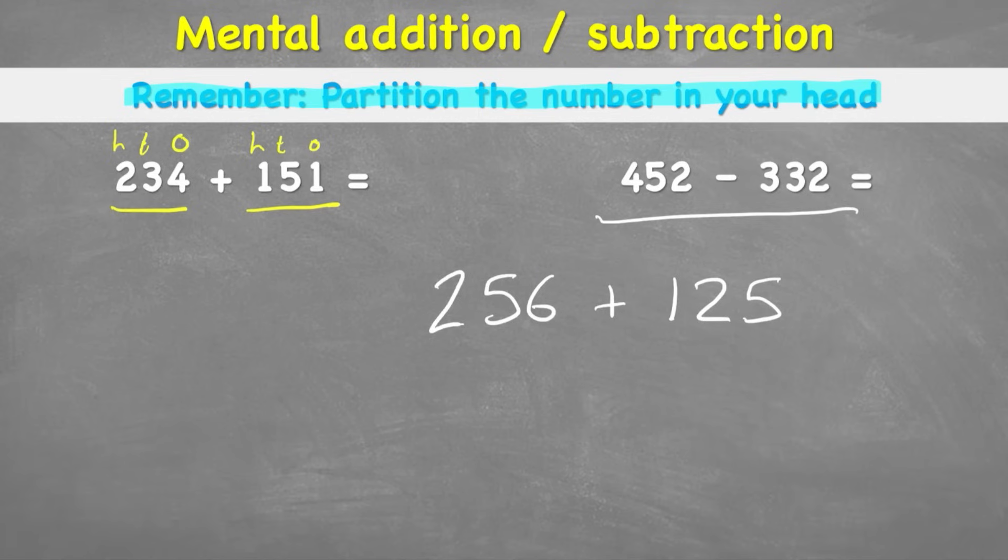Now this time in my head when I add my 6 and my 5 for the ones, I come back with 11. Well, 11 ones isn't very helpful because I can't keep 11 ones in my ones column. So now I have to do an extra process of remembering I have 1 one, and a 10. And the 10 I'm going to add to my tens column. So the answer to my ones column is going to be a 1.